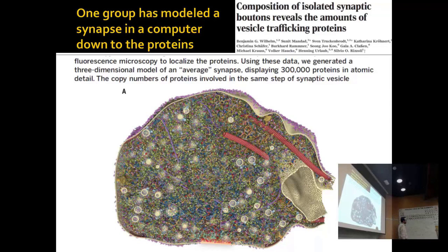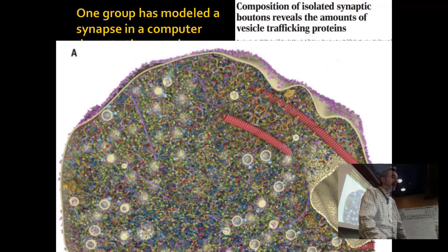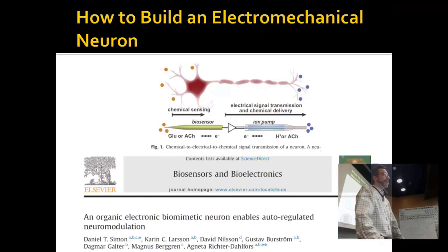Here's a computer model of a synapse modeled down to the proteins — 300,000 proteins in atomic detail — showing vesicle trafficking. This is the same resolution as the actual number of proteins getting to a synapse. We've gotten enough structural and dynamic understanding to do something like this and get it published in Science or Nature. You can zoom in, though zooming in doesn't really help visually.